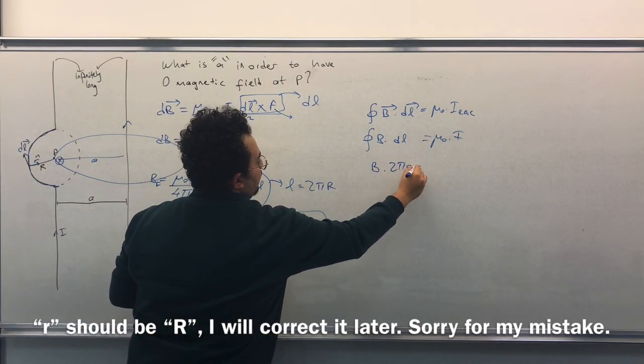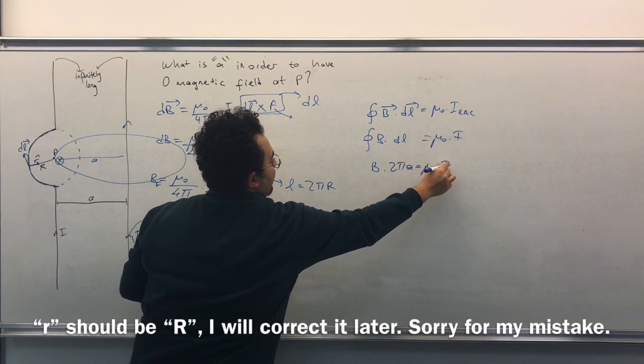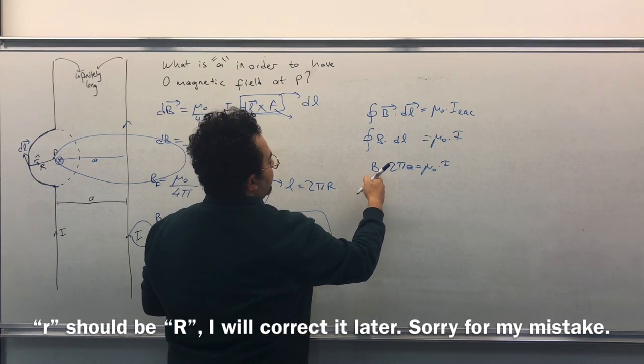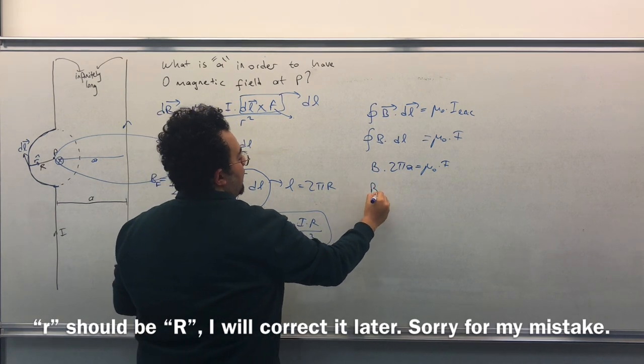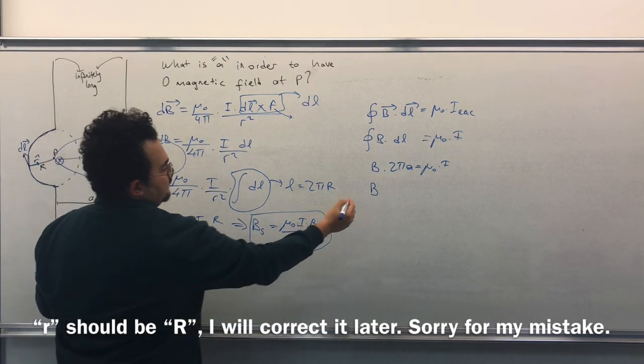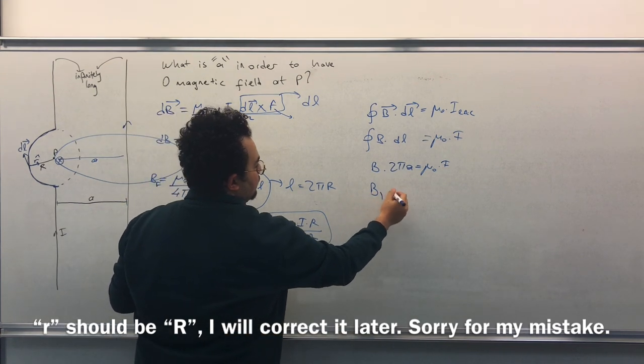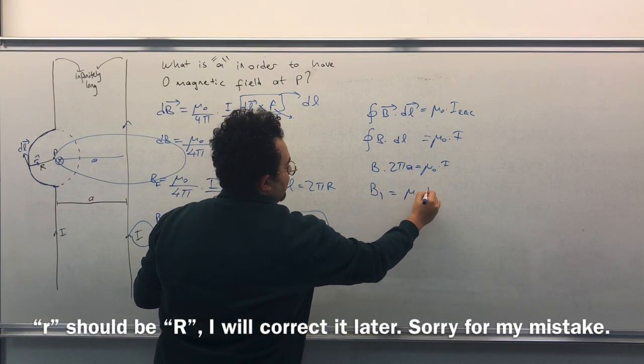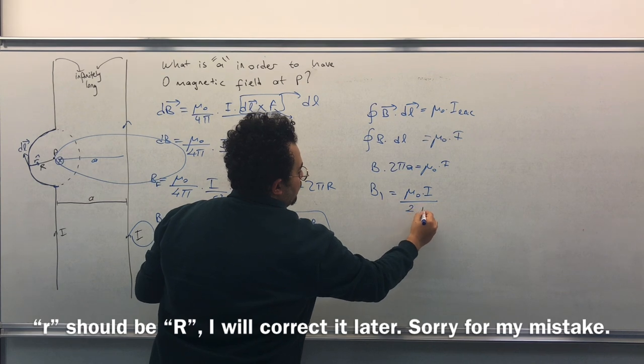So B times 2 pi A equals to mu zero times I. And for B, B equals to mu zero times I divided by 2 pi A.